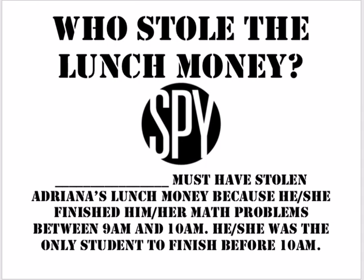Look at your times and see whose time fell between 9 a.m. and 10 a.m. Ruby is the one who finished her assignment between the hours of 9 a.m. and 10 a.m. So Ruby must have stolen Adriana's lunch money because she finished her math problems between 9 and 10 a.m. and she was the only student who finished before 10 a.m. Hope you had a great time with this elapsed time math mystery. Have a great day!